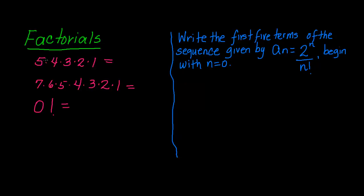We can write this in a shorter way. How we write this is we write 5, which is the first factor, and then we write this symbol, exclamation point. This means 5 factorial.